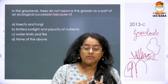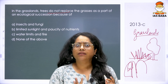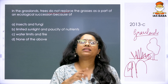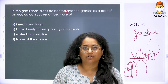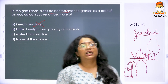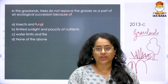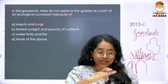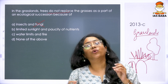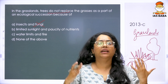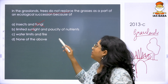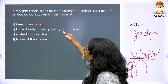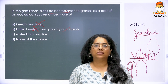Trees need sunlight, proper water, and a good amount of nutrients. Looking at the options: insects and fungi would affect grass and trees equally, not the tree alone, so that is wrong. Limited sunlight and paucity of nutrients — limited sunlight is not stopping trees since sunlight is not blocked by anything. Paucity of nutrients could be a factor, but since limited sunlight is unlikely, that option goes.